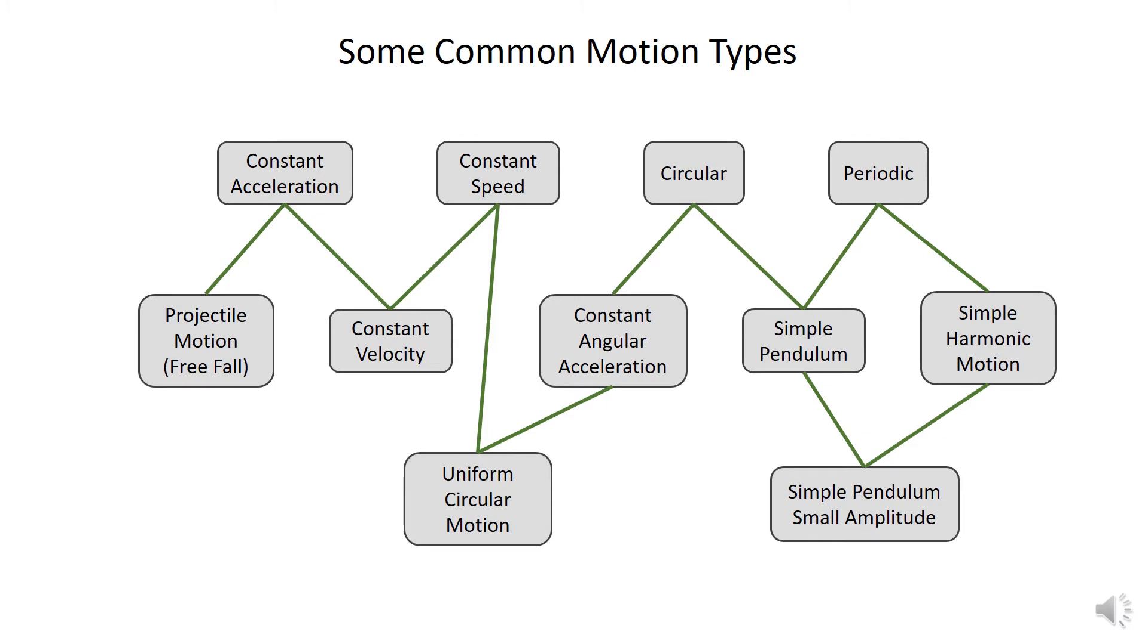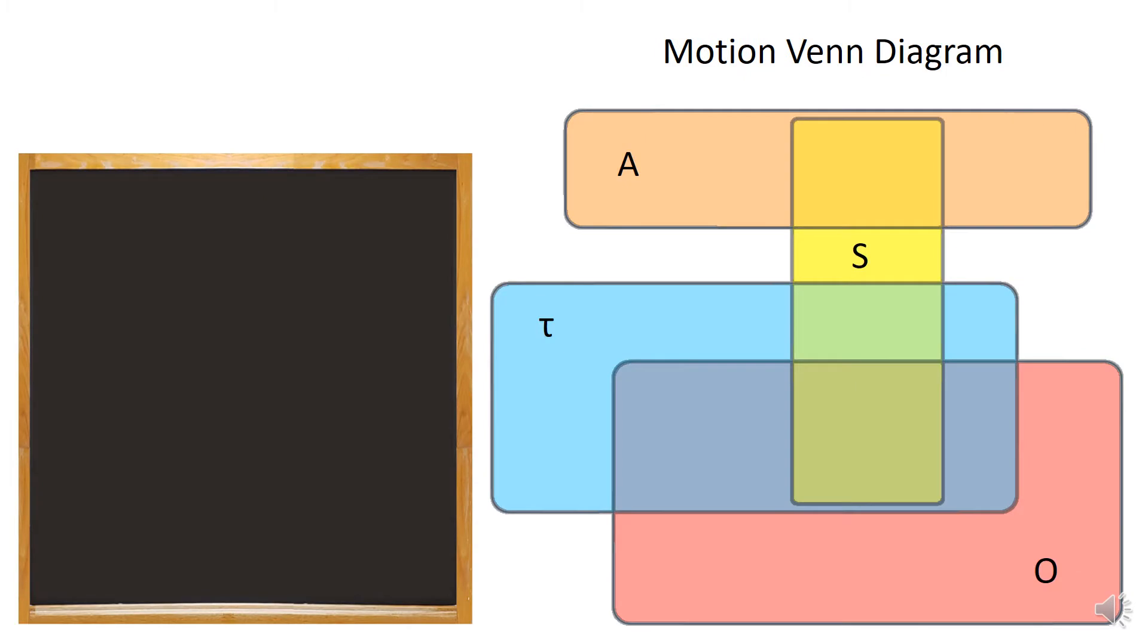Now, to better lay all those out in the figure, I'm going to give each one a symbol just so I can lay that out a little better. A represents constant acceleration. And you can see the rest of the symbols I used here. And what I've done is I've organized these as a Venn diagram because some types of motion are subsets of others.